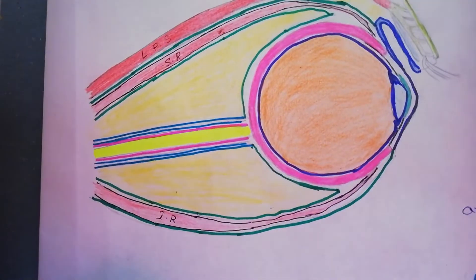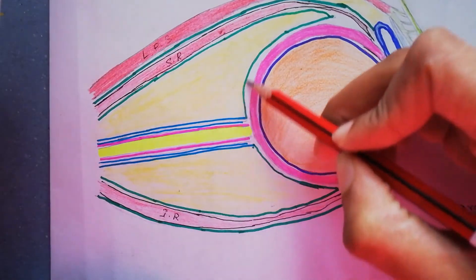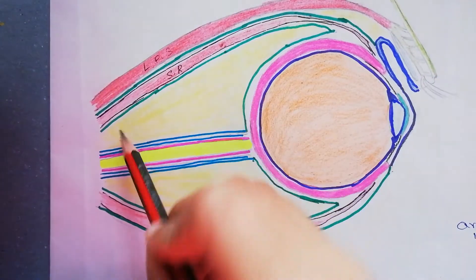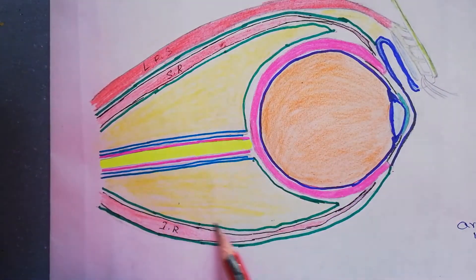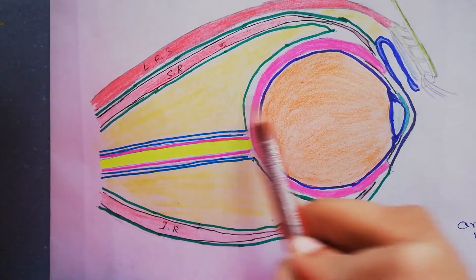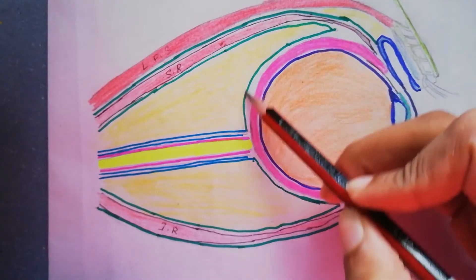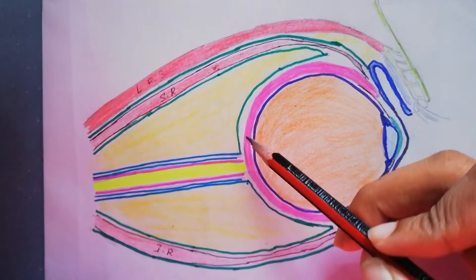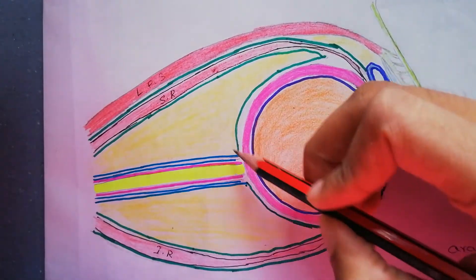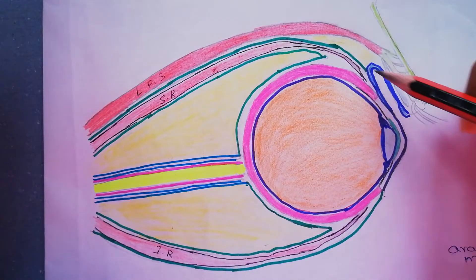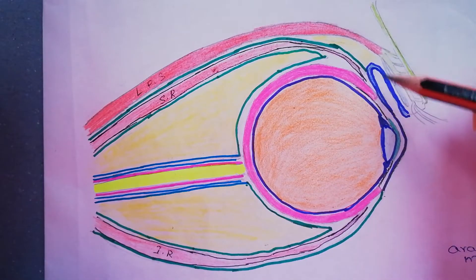This dark green color line is the facial sheath of the eyeball. It separates the eyeball from the orbital fat and provides a socket for the free movement of the eyeball. You can see it surrounds the eyeball from optic nerve to the sclerocorneal junction. It is deficient in front over the cornea.